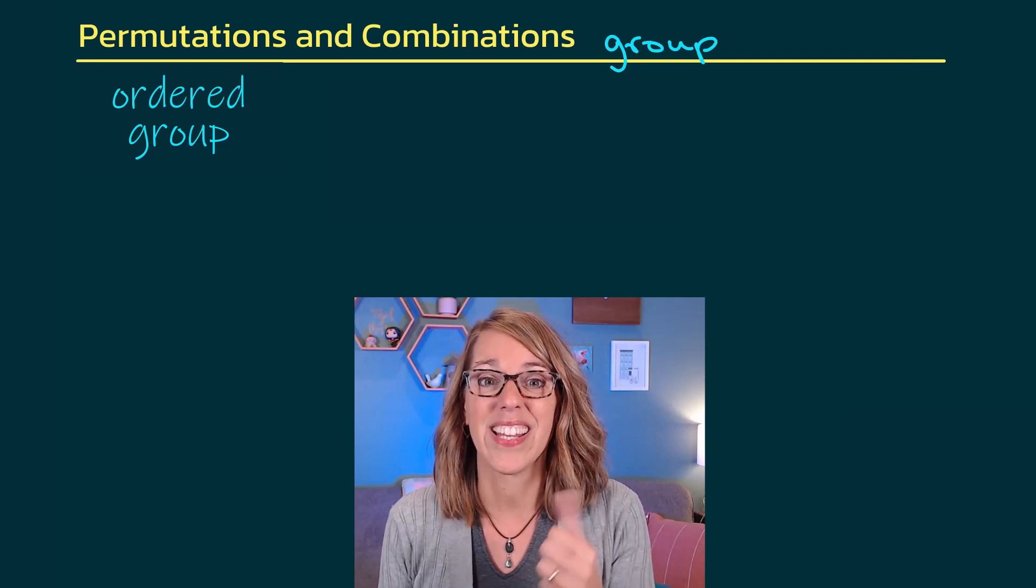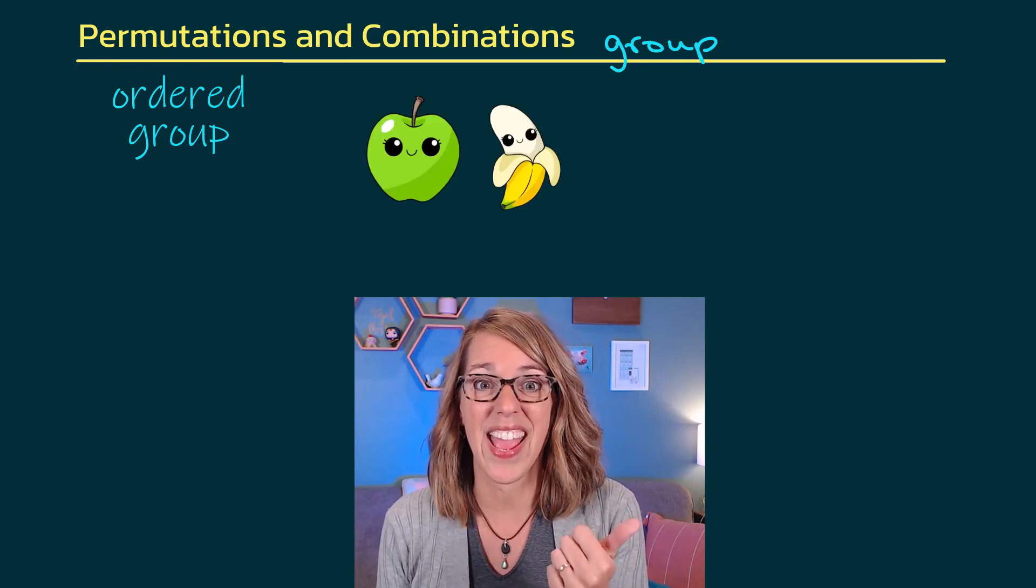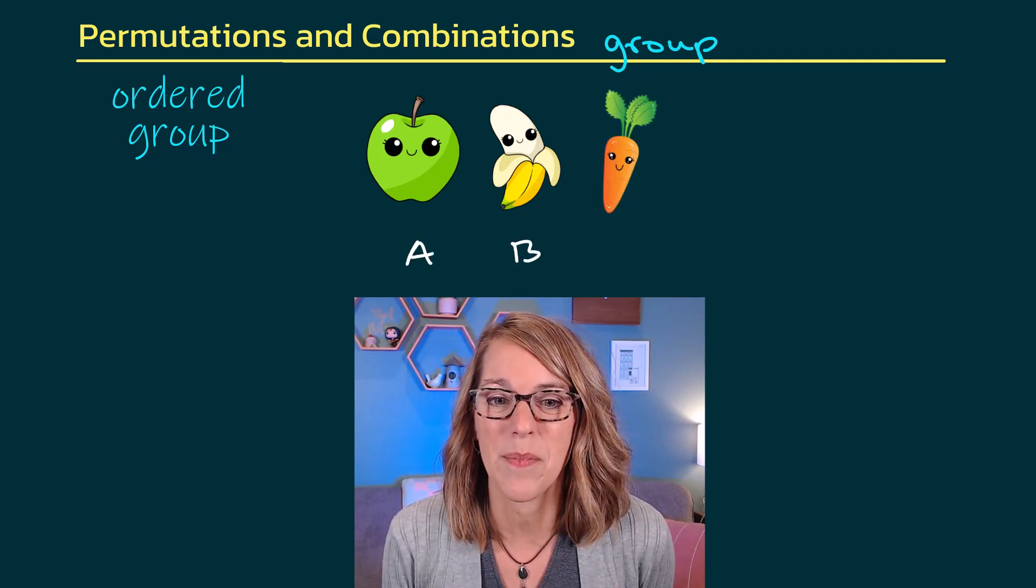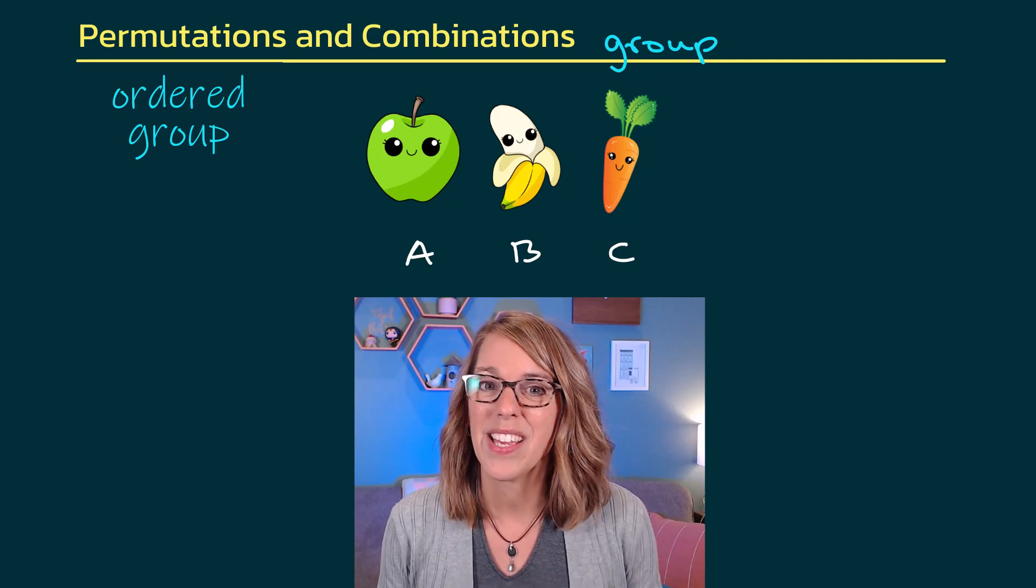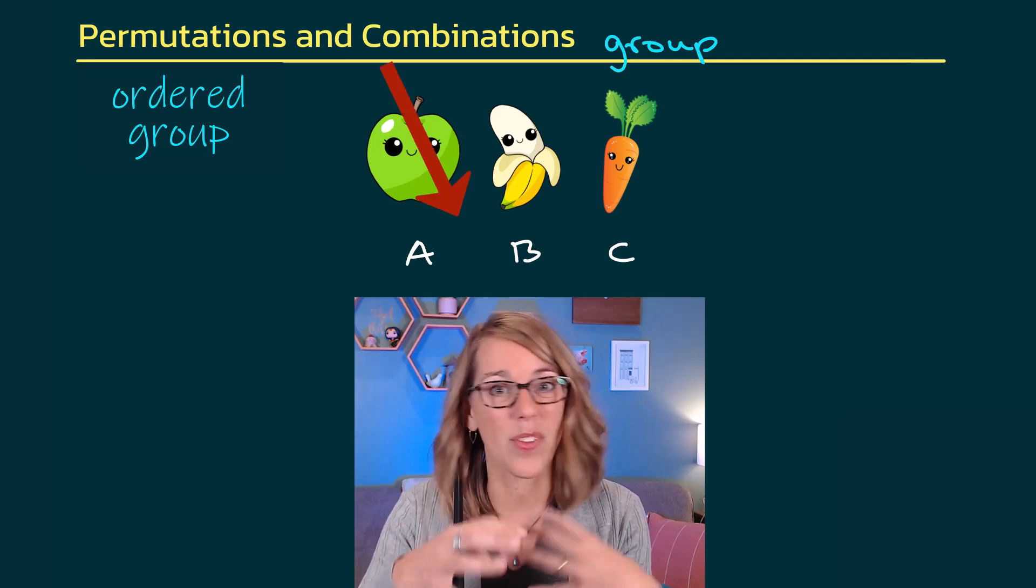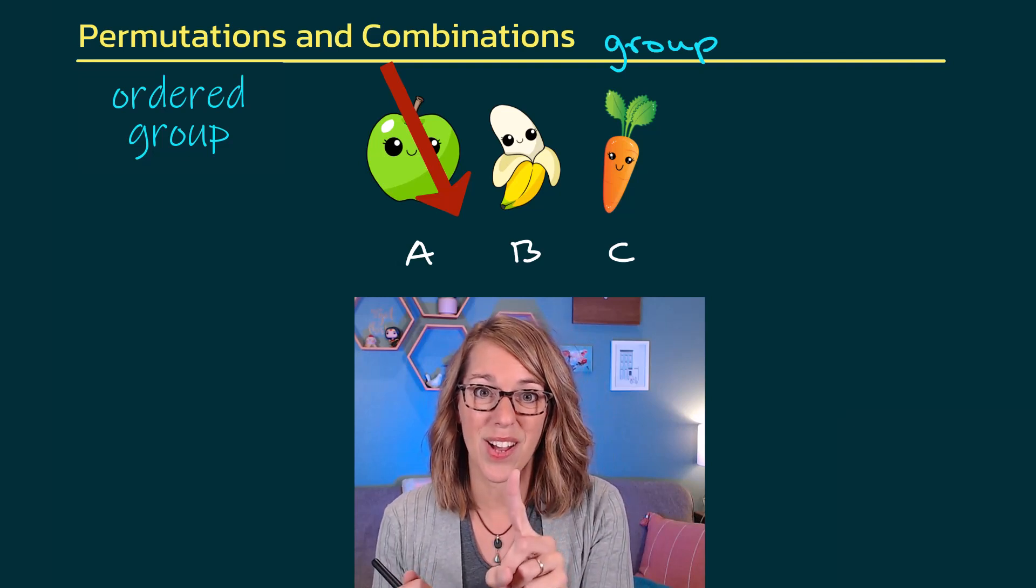Let's say that you've got an apple, a banana, and a carrot. I'm going to abbreviate these A, B, and C. If I was looking for a combination, there's only one group. It doesn't matter what the order is. There's a single combination.